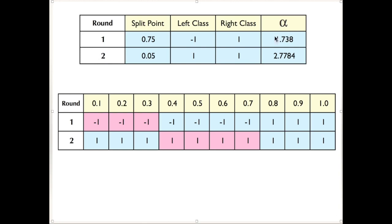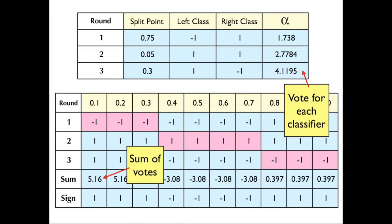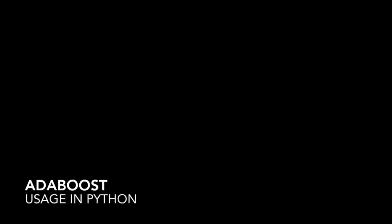We also give a weight to each of the classifiers, which will be clarified later. After we build three classifiers, we successfully reproduce the target values on this training dataset using simple decision stumps, which when used individually cannot reproduce those target value distributions.